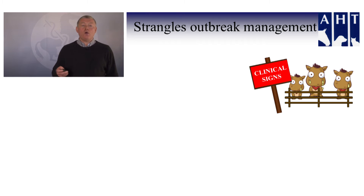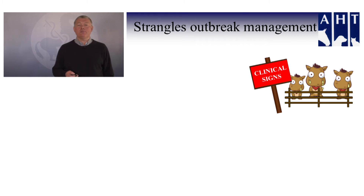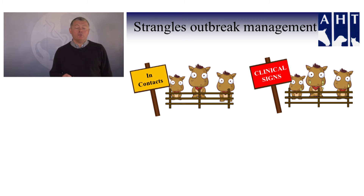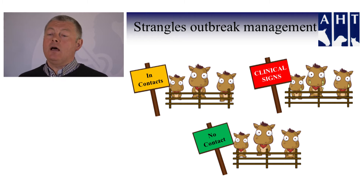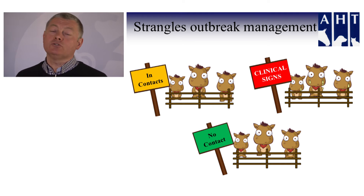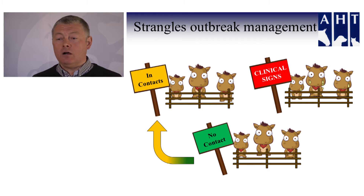I want to talk you through how a strangles outbreak can be effectively managed. We have groups of animals with clinical signs of strangles — they need to be isolated away from other animals on the premises in their red zone. We also have an amber zone: animals that have been in contact with the cases but have not yet developed signs. And then a green group — animals isolated away from both other groups that have no clinical signs and no contact with either group.